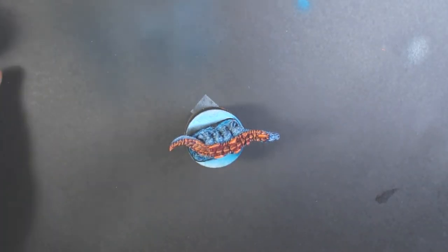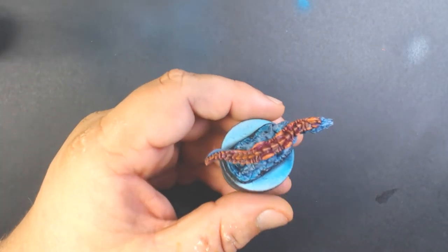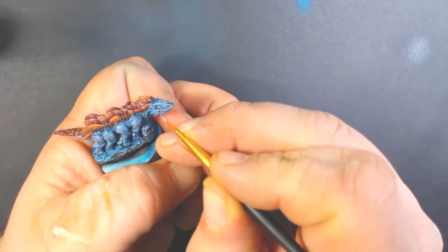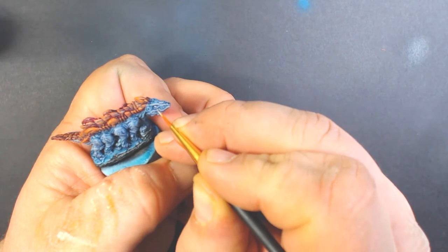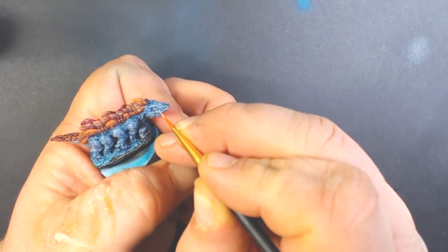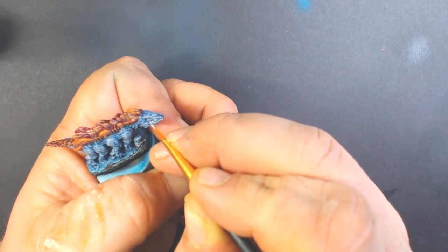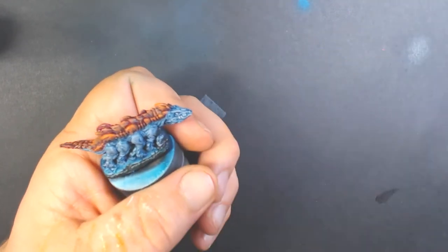Now we've got some Vallejo Model Color Ivory and we're just going to pick out the teeth.